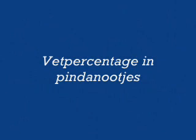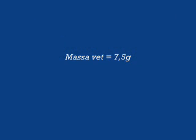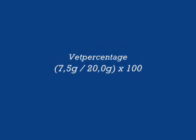Uiteindelijk kunnen we dan het vetpercentage in pindanootjes gaan bepalen. We zijn vertrokken van 20 gram pindanootjes in de extractiehuls. Uiteindelijk hadden we 7,5 gram vet. We kunnen dit met behulp van de regel van 3 gaan uitrekenen, zodanig dat we het vetpercentage krijgen. Het vetpercentage in de pindanootjes bedraagt dan ook 37,6%.